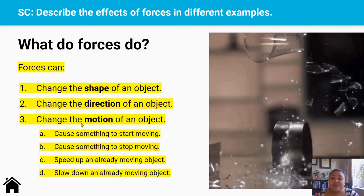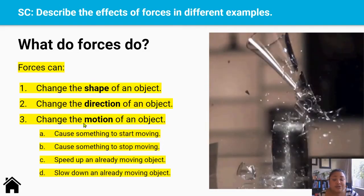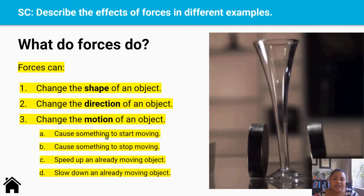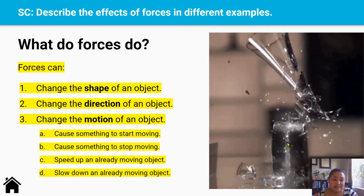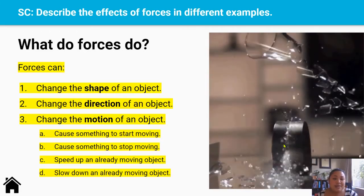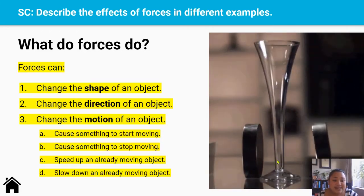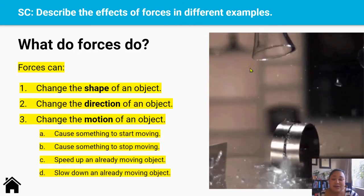Forces can also change the way an object moves, so it can change the motion of an object. It can make something start moving. So this glass was still here, it wasn't moving. And then when forces are applied on it, it starts to spin wildly and it goes upside down.